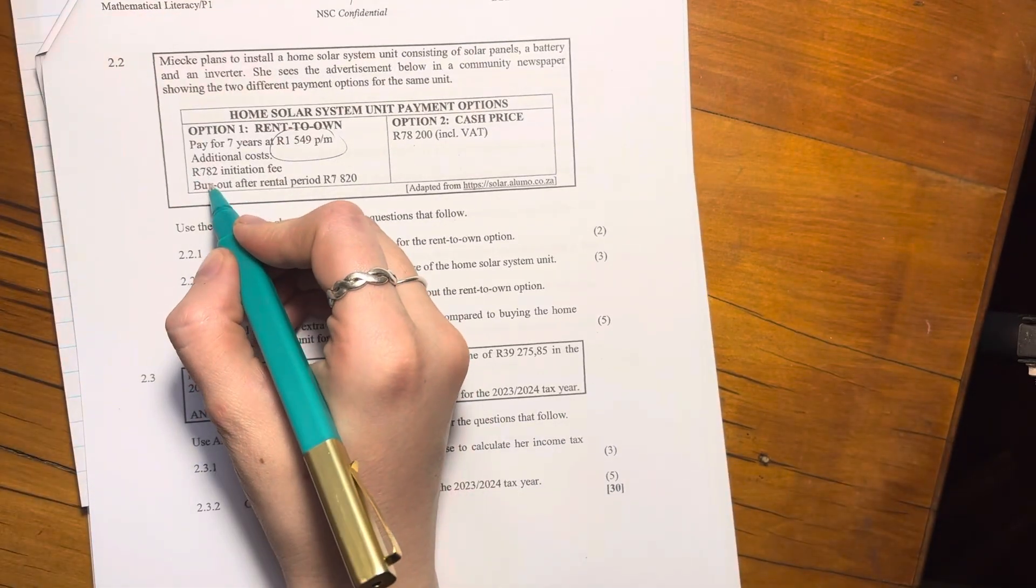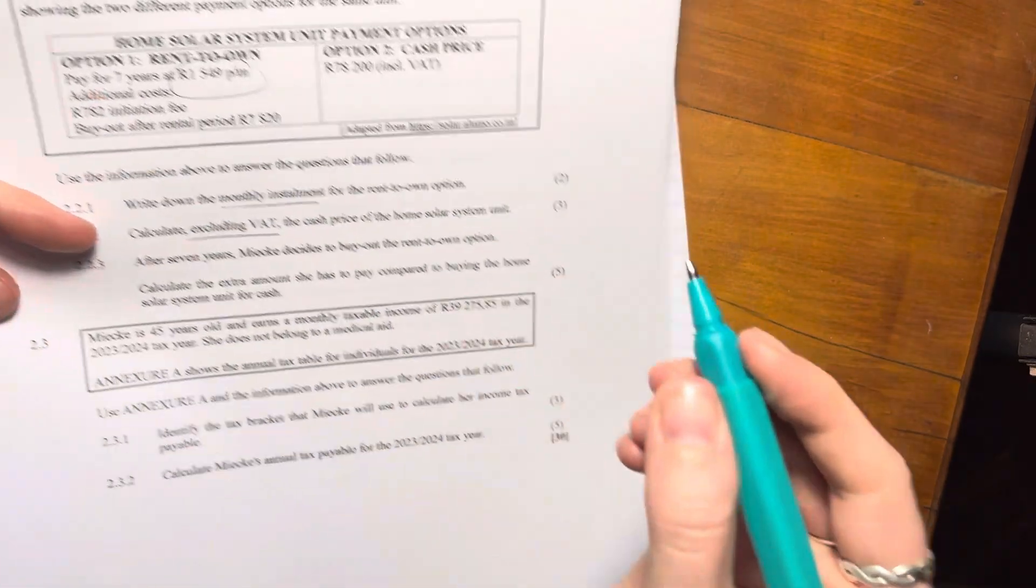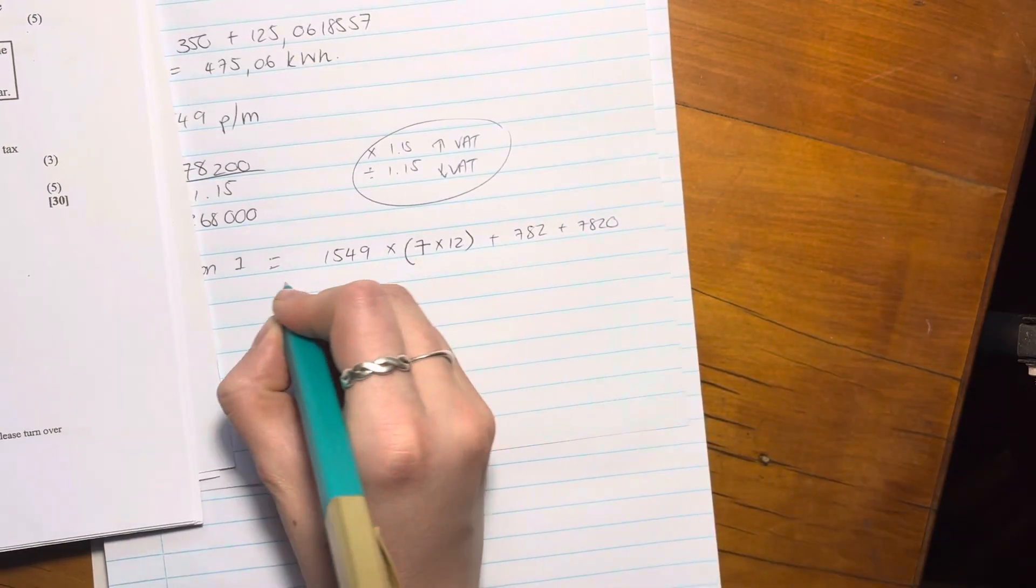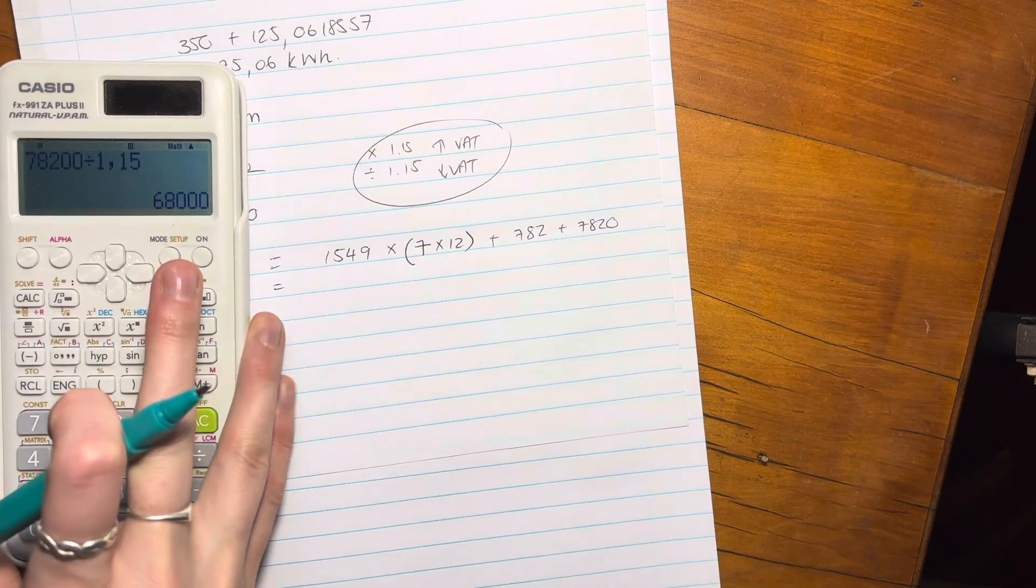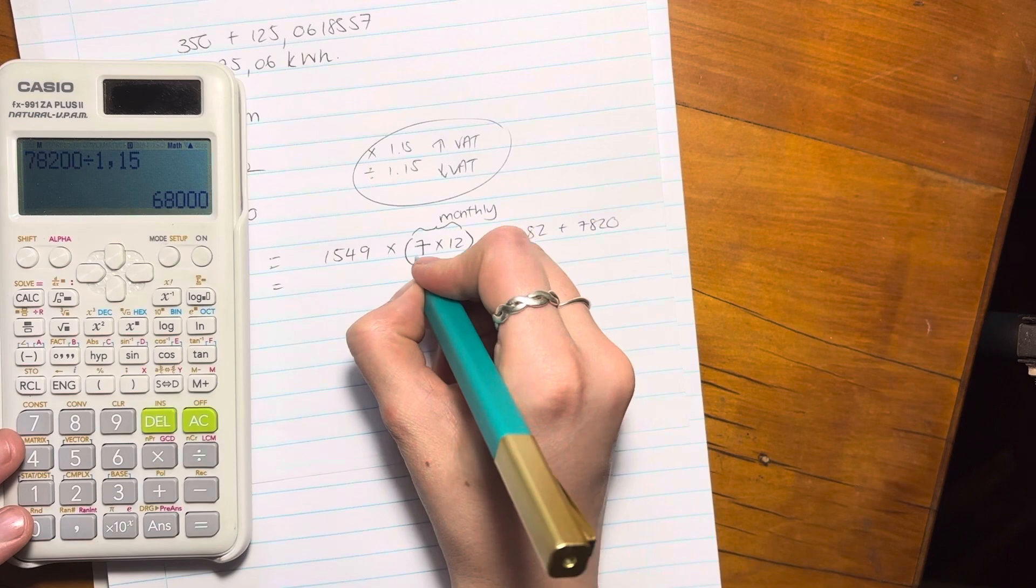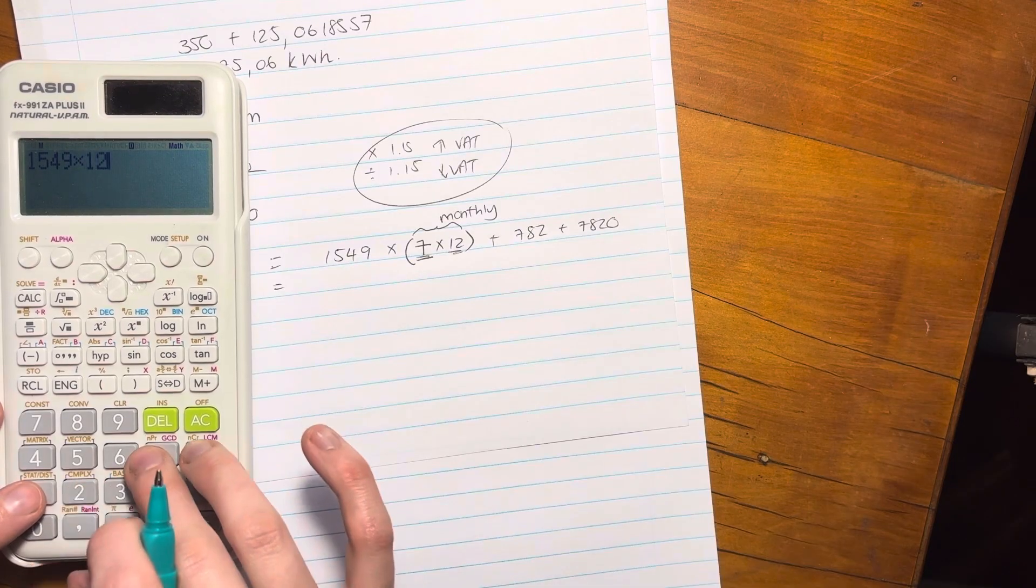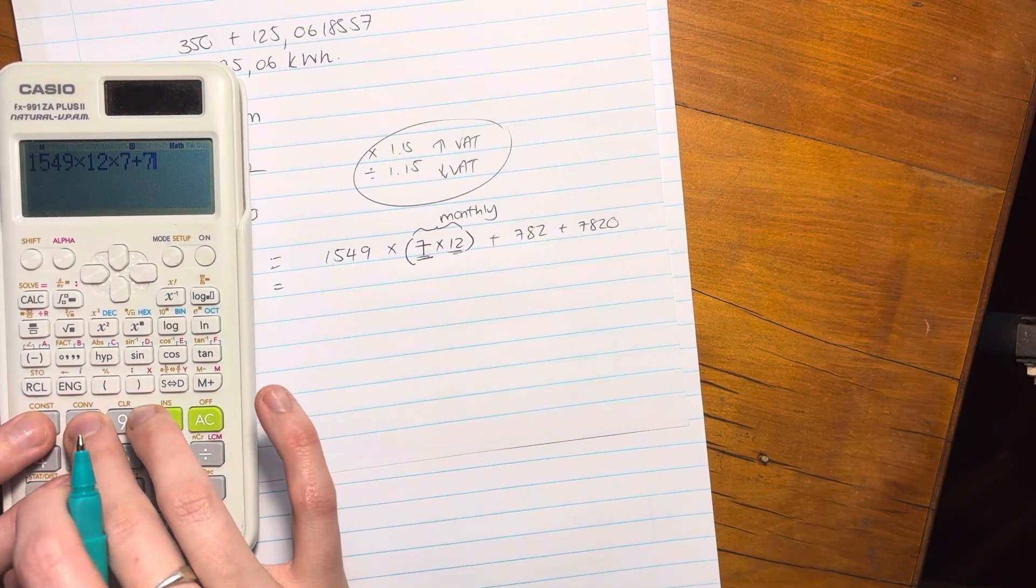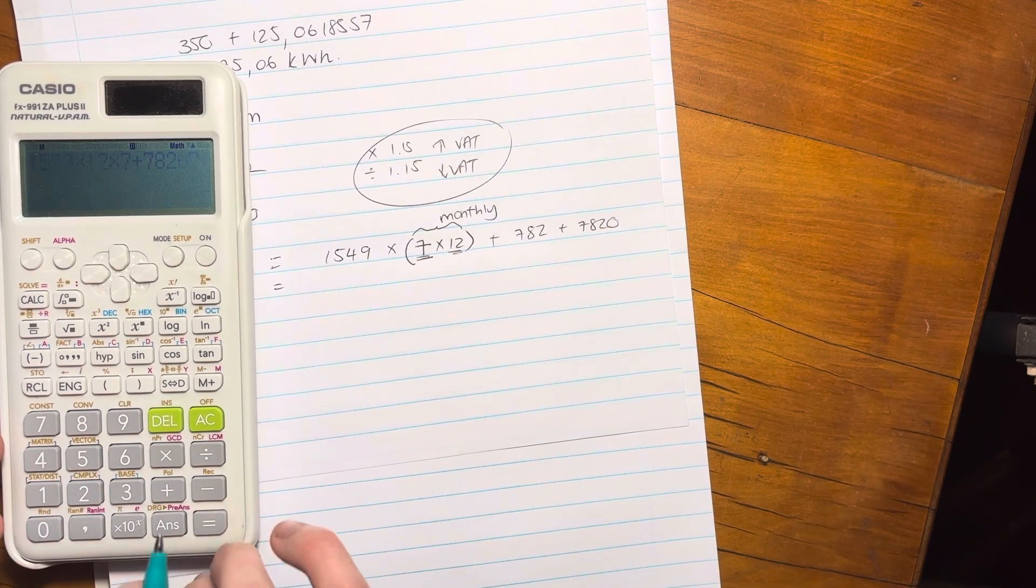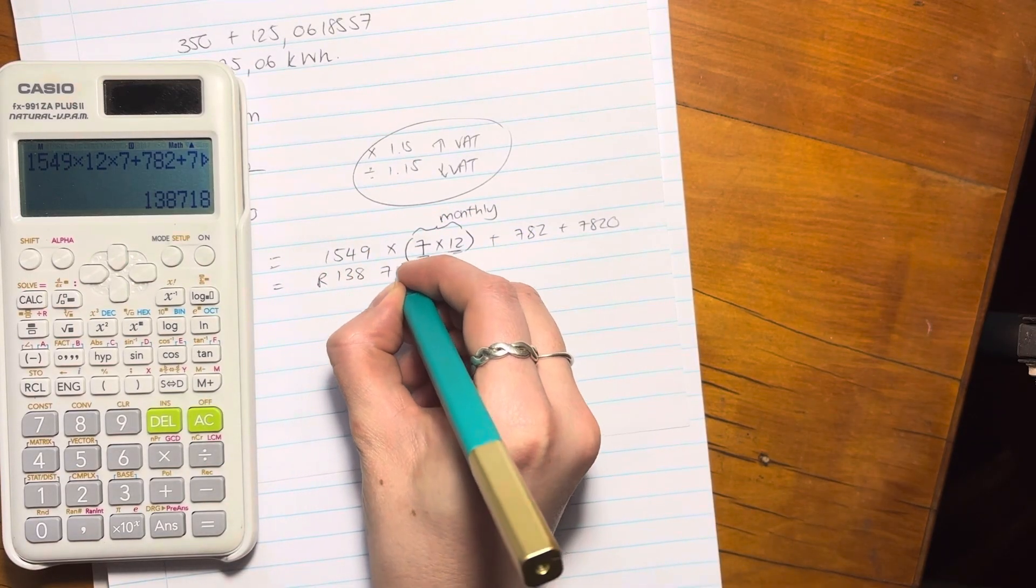Then let's add on the additional fees. So the additional fees is R782 for the initiation. And then there's this buyout after the period of R7820. So we have to add both of those in. So that's my total amount that I'm going to pay. Please make sure you understand that this is monthly, right? Because that's years and that's months. So we're going to say R1549 times by 12 times by seven to make it monthly, plus R782, that's my initiation fee, plus R7820, which is my amount that I have to pay at the end. And my total amount that I'm going to pay there in Rand is R138,718.